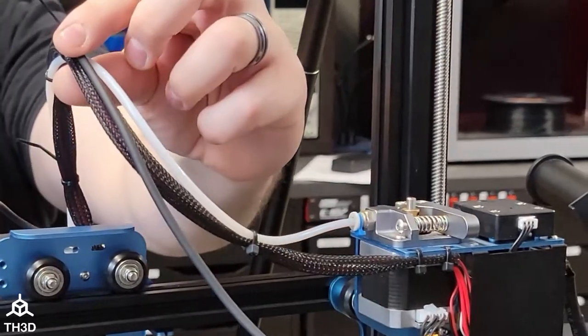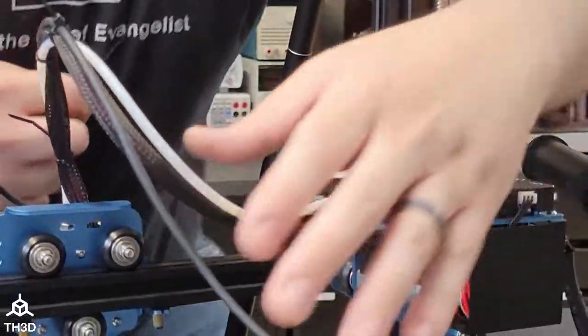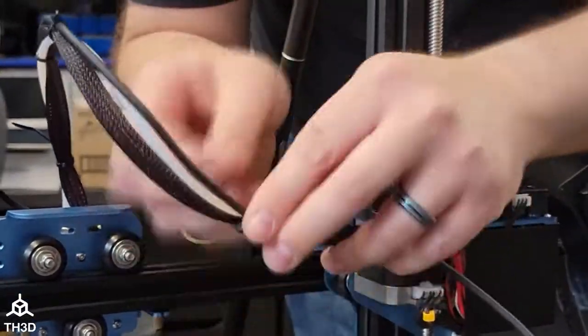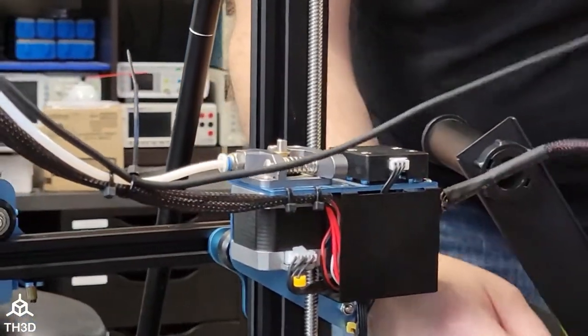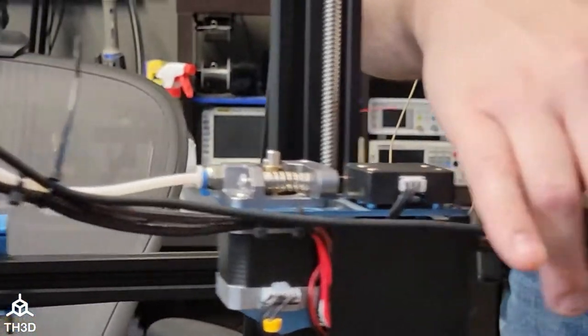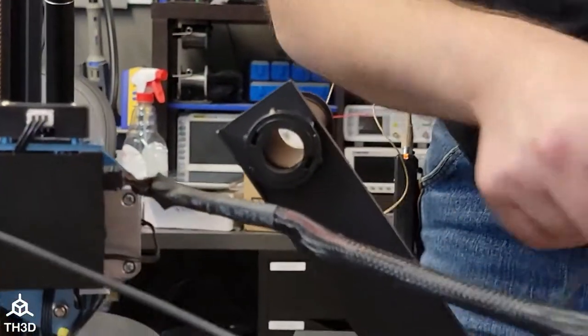Make sure to not over-tighten the zip ties; you just want them snug so they don't move. Then we're going to go all the way down and follow the rest of the cable that's on the printer until we get back to the control box.